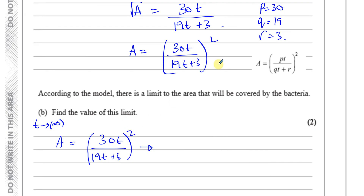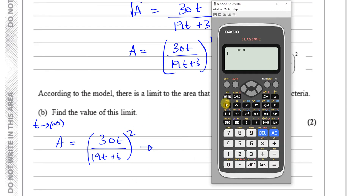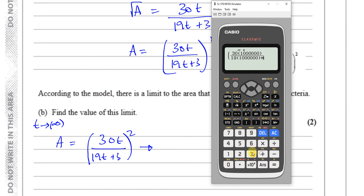As t approaches a really big number, 30t / (19t + 3) all squared will approach — you can just substitute t as a million. So (30 × 1,000,000) / (19 × 1,000,000 + 3), all squared. That gives approximately 2.493.